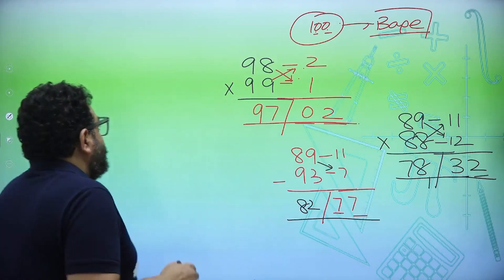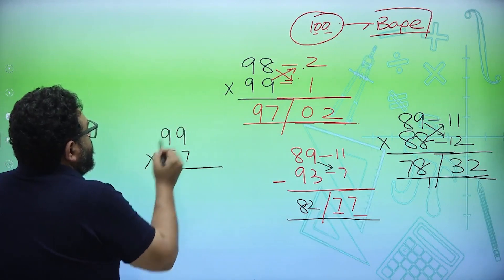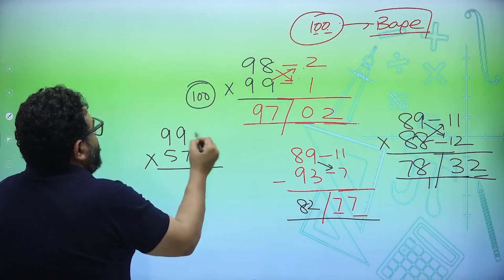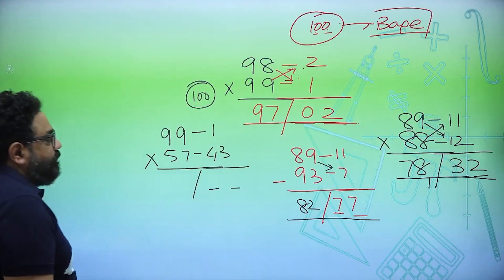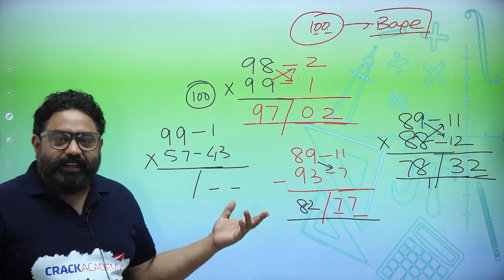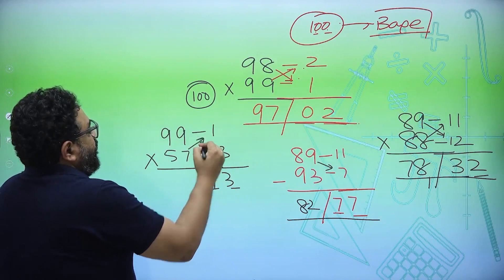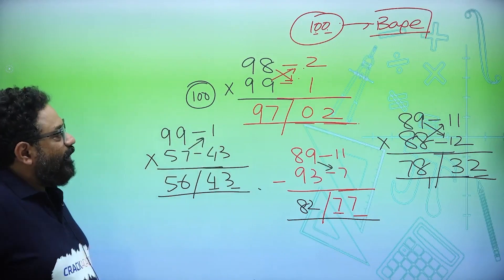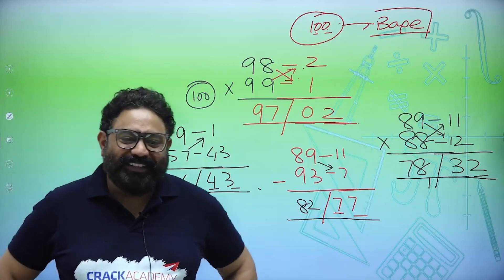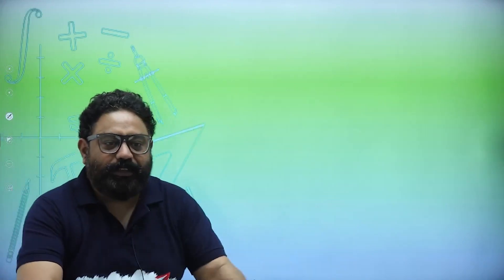I hope that this is one method which you can use in your day-to-day calculations. One more example. I can say what is 99 into 57? Take base to be 100. How much less? Minus 1, minus 43. Two spaces again. So what is the answer? 43 into 1 is 43, and 57 minus 1 is 56. 5643. So I think base 100 is an amazing method.